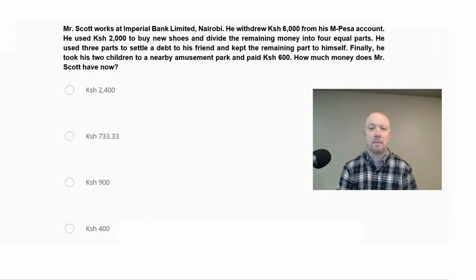Mr. Scott works at Imperial Bank Limited in Nairobi. He withdrew 6,000 Kenyan shilling from his M-Pesa account. He used 2,000 Kenyan shilling to buy new shoes and divide the remaining money into four equal parts. He used three parts to settle a debt to his friend and kept the remaining part to himself. Finally, he took his two children to a nearby amusement park and paid 600 Kenyan shilling. How much money does Mr. Scott have now?